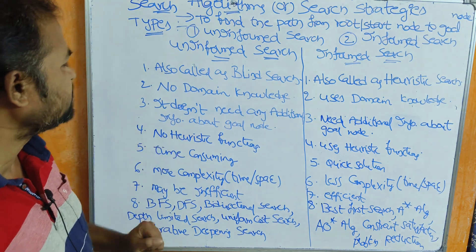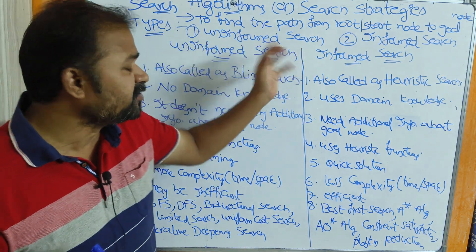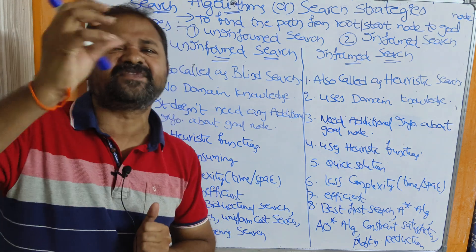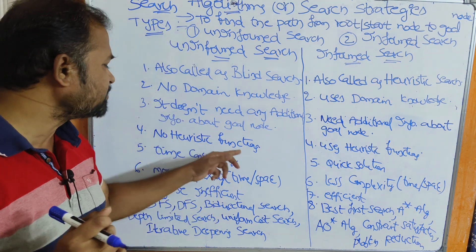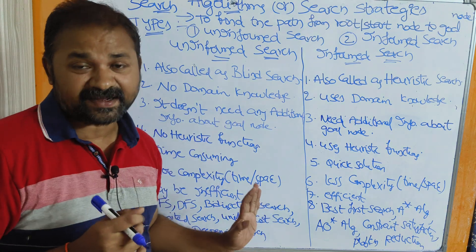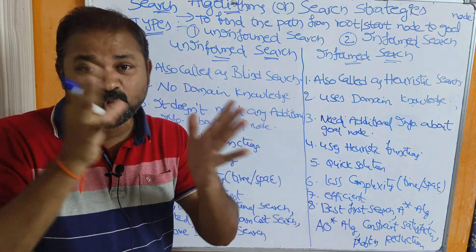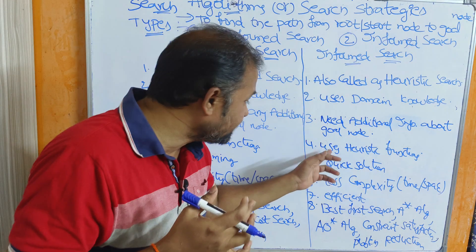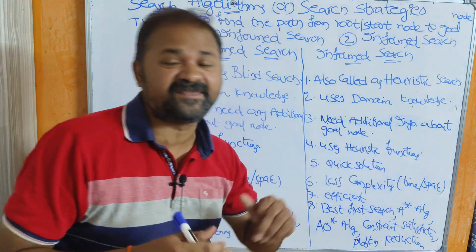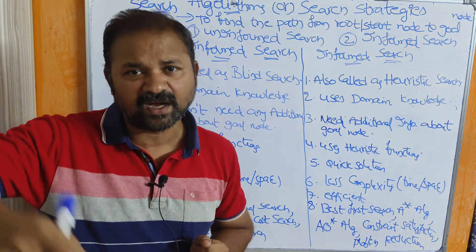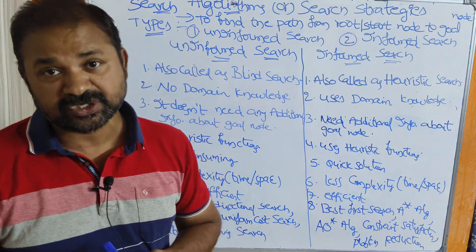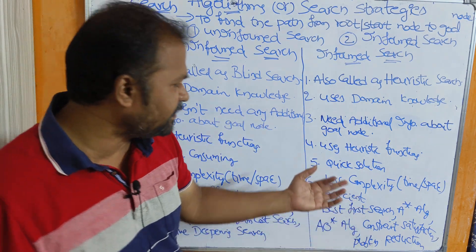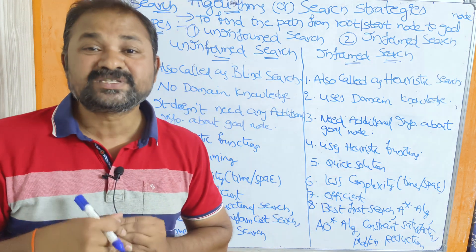The third point: in the uninformed search technique, there is no need for any heuristic functions — it blindly explores nodes one by one. Whereas in informed search, heuristic functions are used. Out of all the available neighboring nodes, the best node is calculated with the help of the heuristic functions.